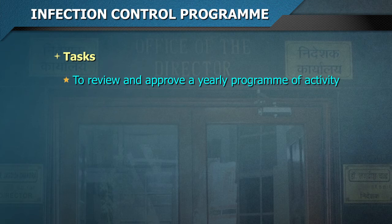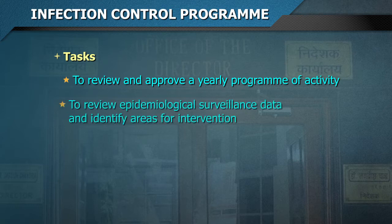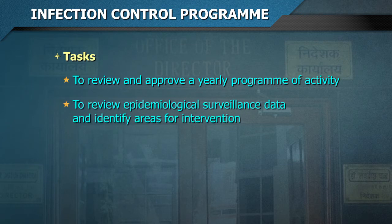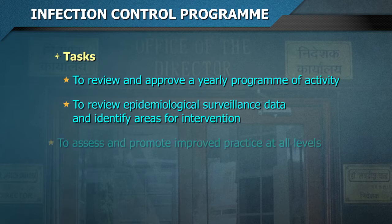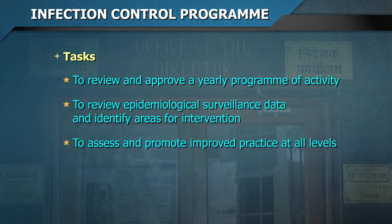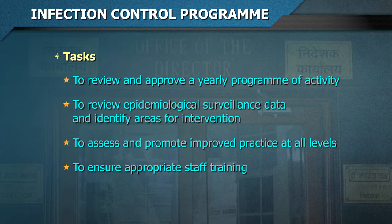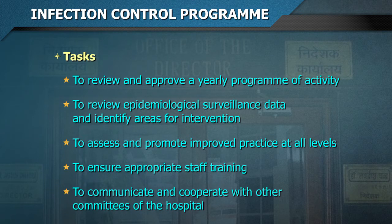The committee has the following tasks: to review and approve a yearly program of activity for surveillance and prevention; to review epidemiological surveillance data and identify areas for intervention; to assess and promote improved practice at all levels of the health facility; and to ensure appropriate staff training in infection control and safety, and to communicate and cooperate with other committees of the hospital.